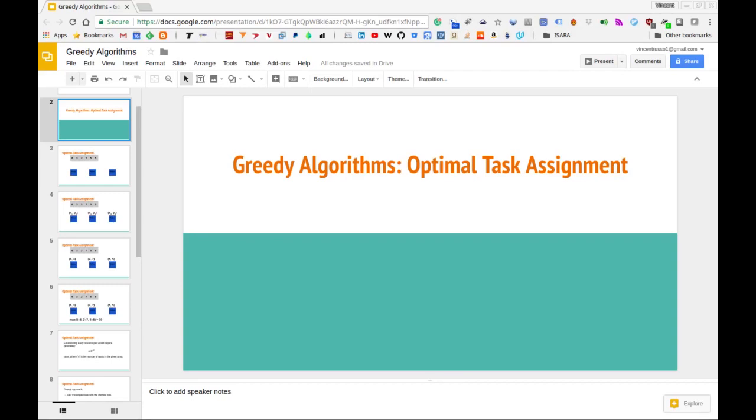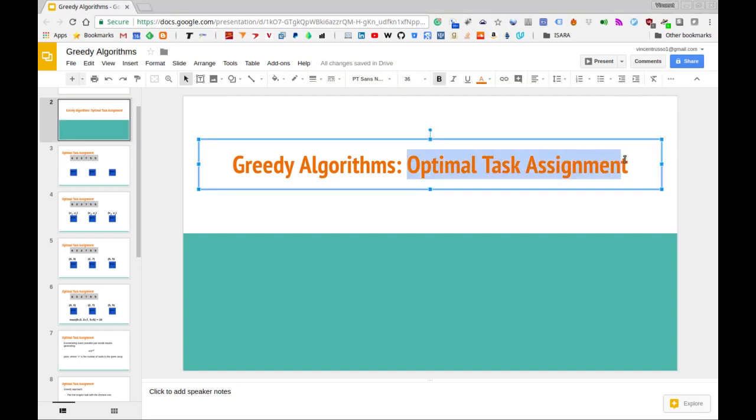Okay, so in this video we are going to be solving the optimal task assignment problem. In order to do that, we're going to make use of a greedy algorithm strategy. We'll be defining what this problem is, outlining how we can solve it using a greedy approach, and then we'll code up that solution in Python.